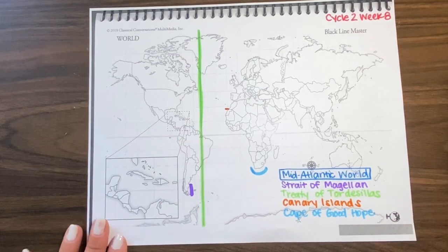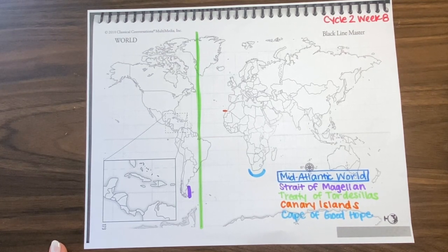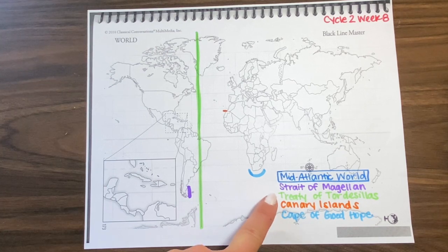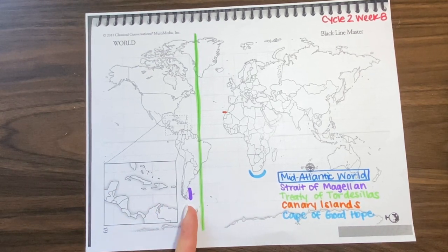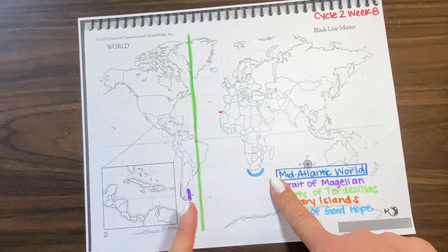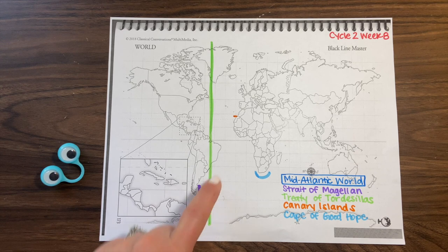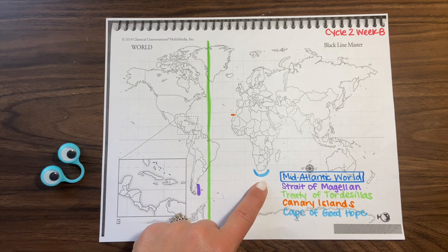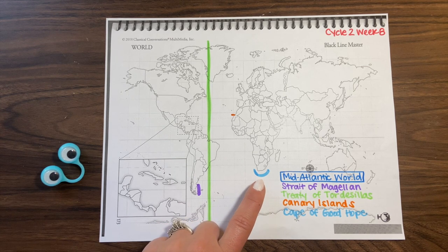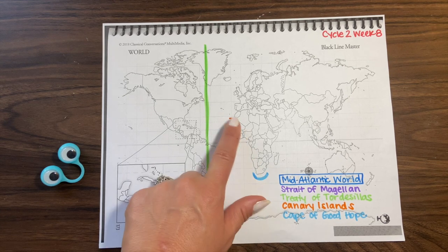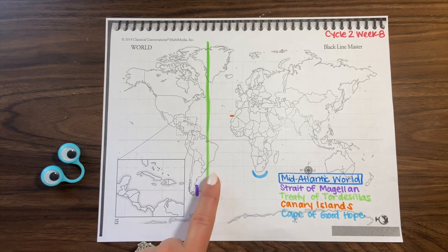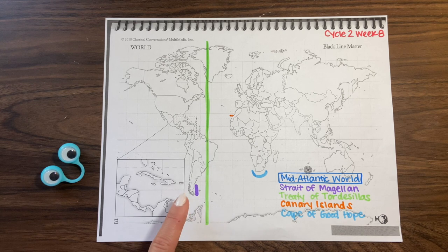The Treaty of Tordesillas is really interesting. The song I'll do with them is to the tune of Gilligan's Island. You can sing it west to east or east to west. Here it is east to west: 'Strait of Magellan, Treaty of Tordesillas, Canary Islands, Cape of Good Hope — this is the mid-Atlantic world.' Or going the other direction: 'Cape of Good Hope, Canary Islands, Treaty of Tordesillas, Strait of Magellan — this is the mid-Atlantic world.'